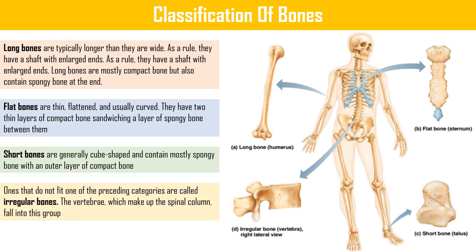Bones that do not fit one of the preceding categories are called irregular bones. The vertebrae, which make up the spinal column, fall into this group.